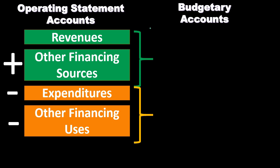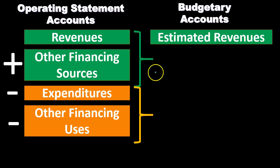Now we'll compare these to the counterparts within the budgetary accounts. When you consider the trial balance, these items appear at the bottom under what would be the equity or net position accounts. It gets crowded there because we have the normal operating statement accounts — revenues and expenditures replacing expenses — plus the budgetary accounts, including estimated revenues.